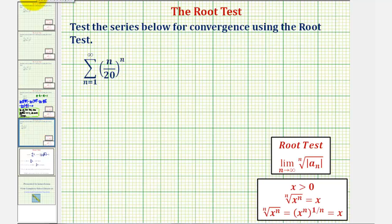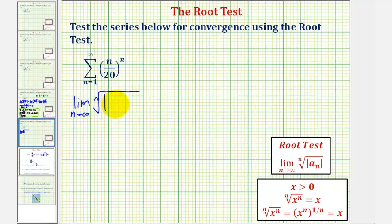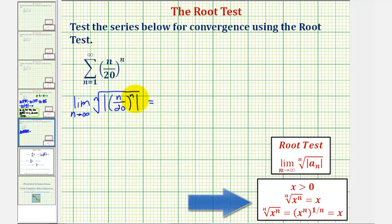It's a pretty straightforward test to apply. We'll find the limit as n approaches infinity of the nth root of the absolute value of n divided by 20, raised to the nth power. Because of the absolute value, we know this is positive. So if we take the nth root of something raised to the nth power, it simplifies perfectly — in this case, to one factor of n divided by 20.